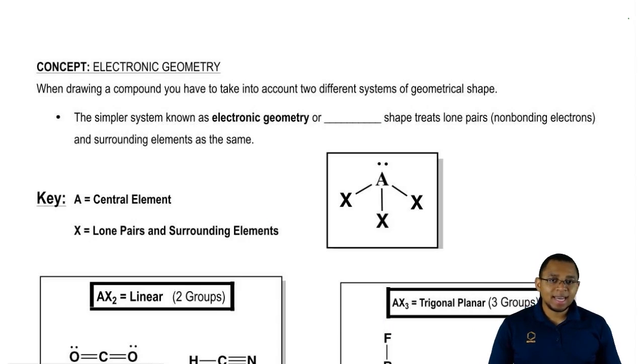This first one we're going to look at is the electronic geometry. This is known as the simpler geometry. Electronic geometry can also be called orbital shape.